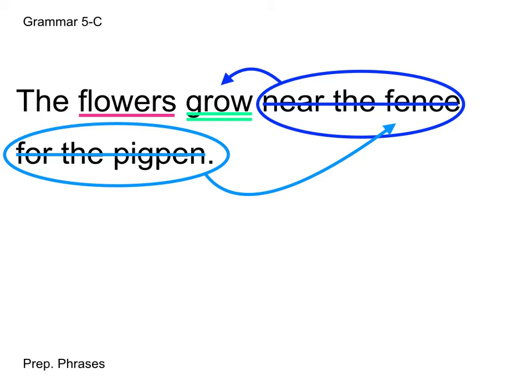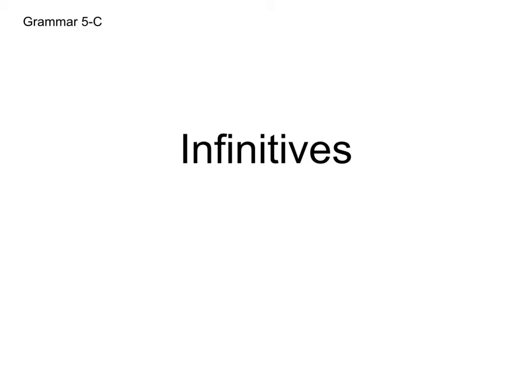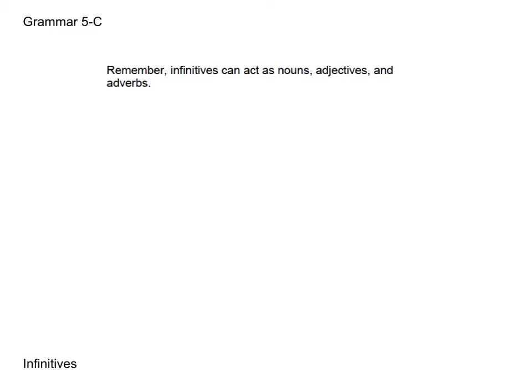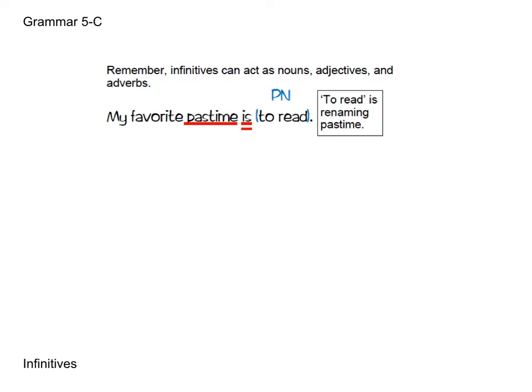Now we're going to move on to infinitives, which is review. We've learned a lot about infinitives over the past couple of books. Remember, infinitives can act as nouns, adjectives, and adverbs, so they can do just about anything other words can do. The first example is 'My favorite pastime is to read.' 'To read' is renaming the pastime — it's giving a new name in the predicate, making it the predicate nominative. You can flip it: 'To read is my favorite pastime' — still makes sense.